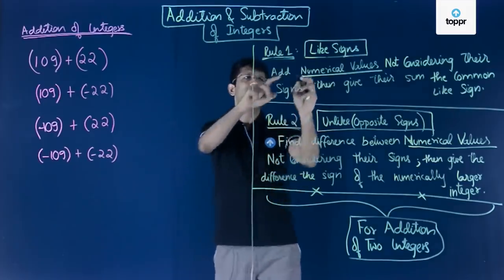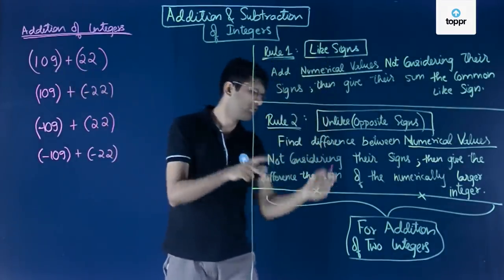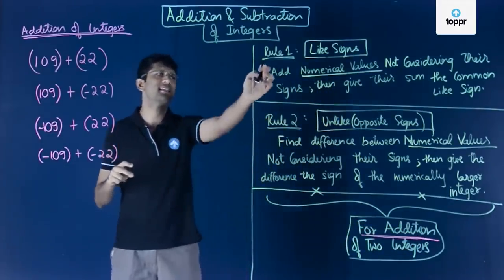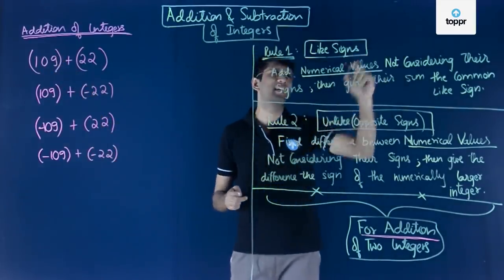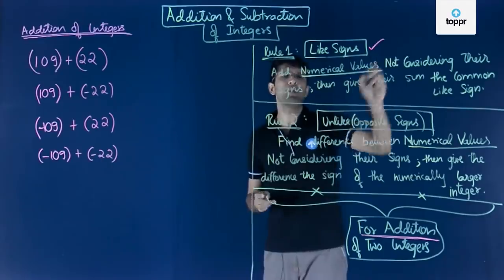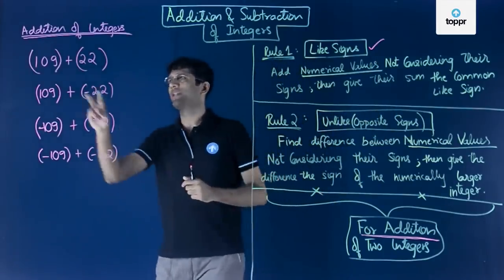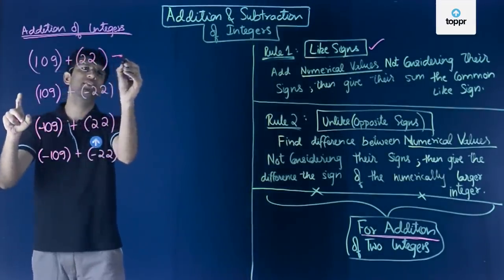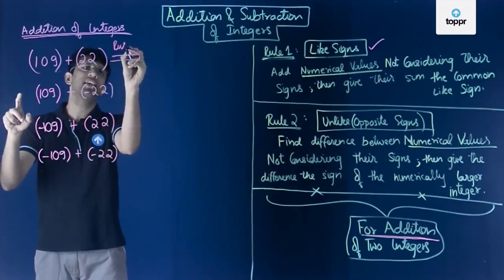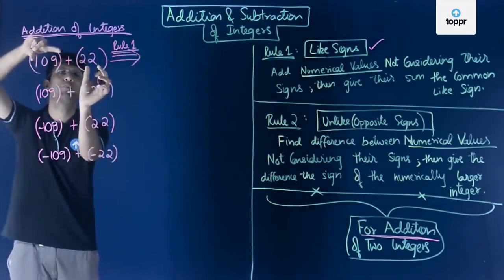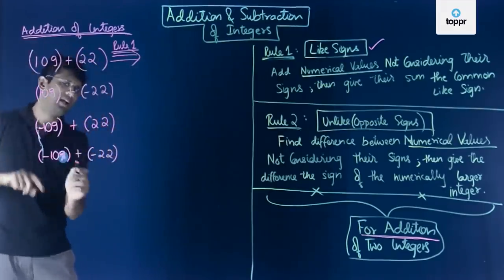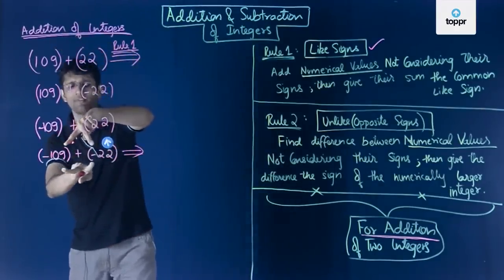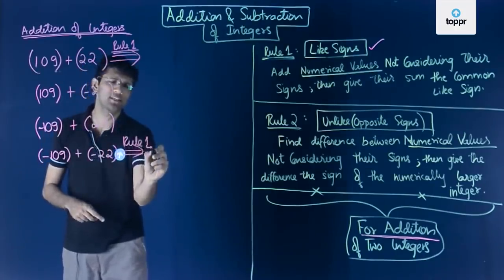To solve these cases, we have two rules. Rule one says that if the two integers to be added have like signs — meaning either both are positive or both are negative — then rule one applies. So for the case where both numbers are positive and the case where both numbers are negative, rule one applies because the signs are similar.